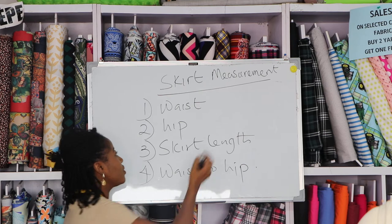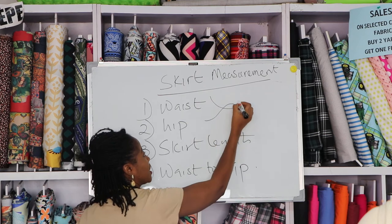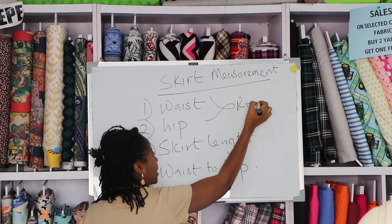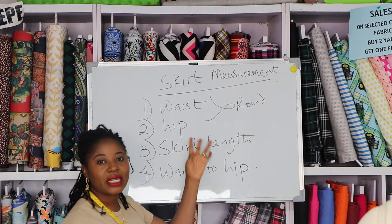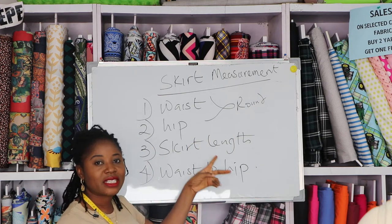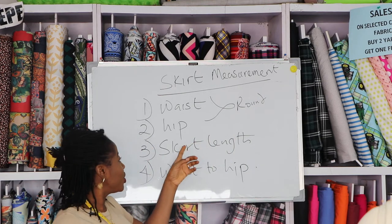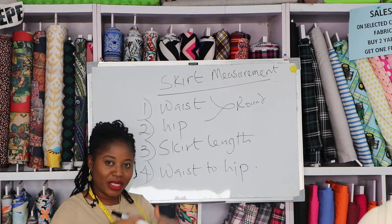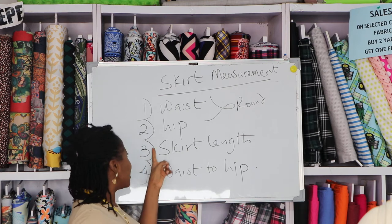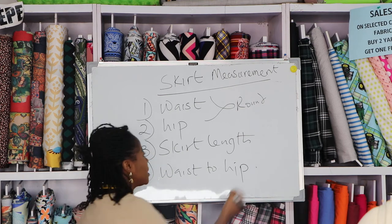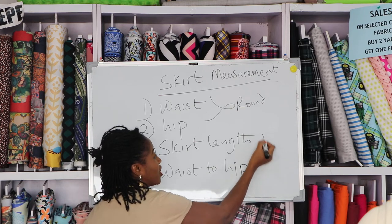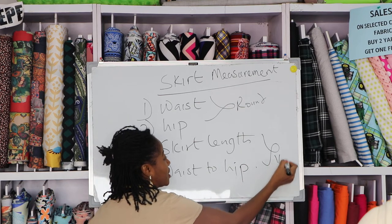These two measurements — waist and hip — are round measurements, meaning you take them going around the body. You'll understand what I mean once I demonstrate. The other two measurements, the skirt length and waist to hip, are straight, or vertical, measurements.